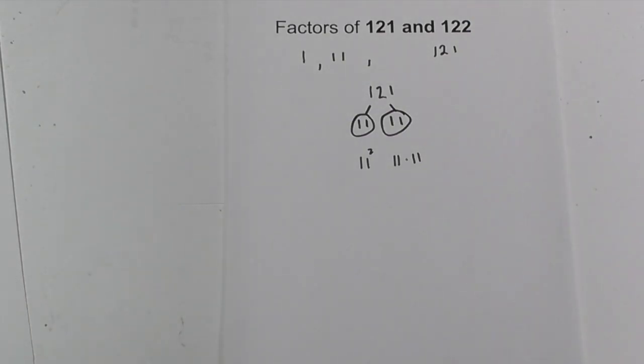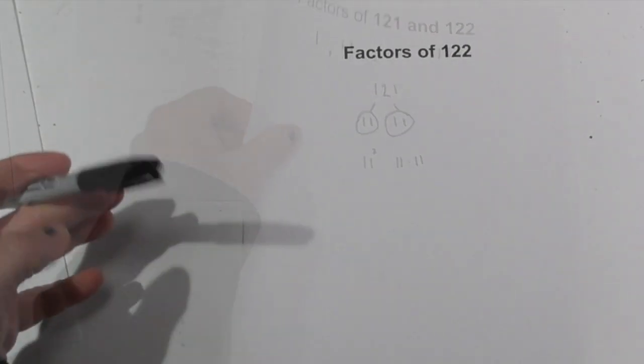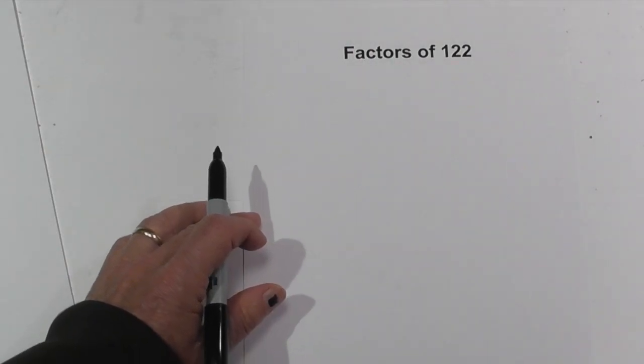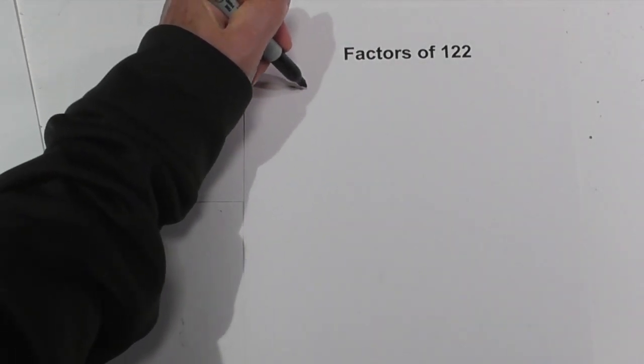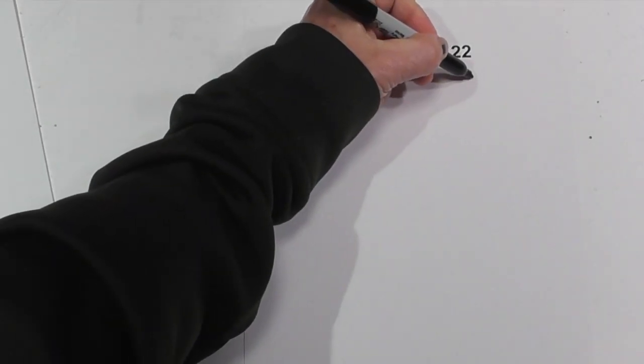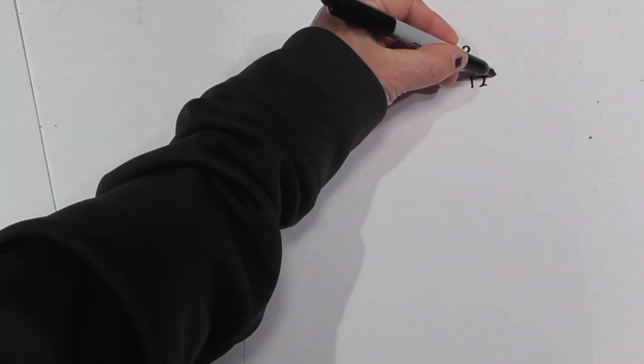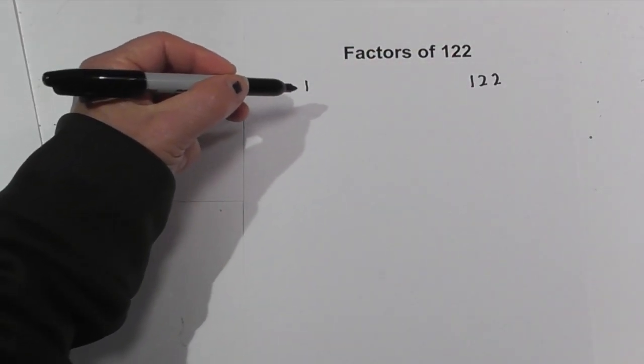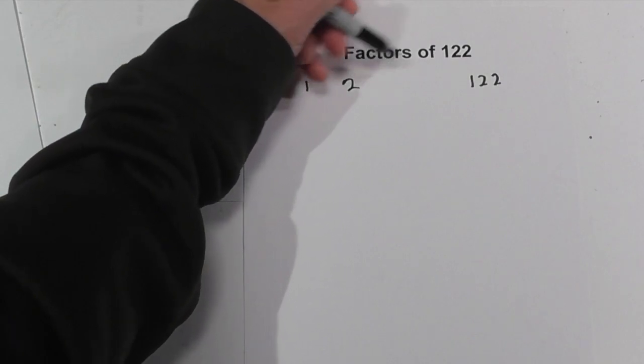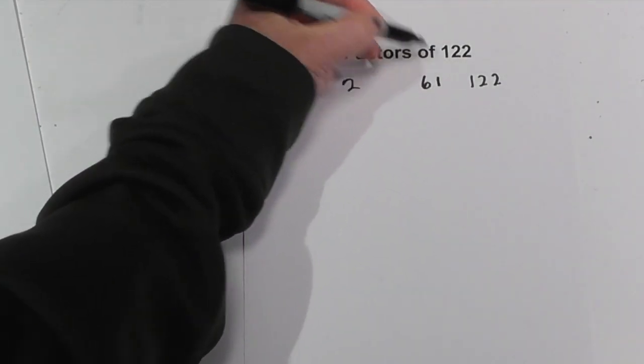Now, let's look at 122. The factors of 122 are as follows. So you can go 1 times 122 and then we can go 2 times 61.